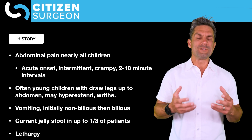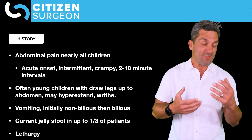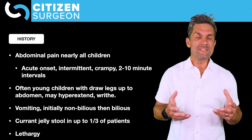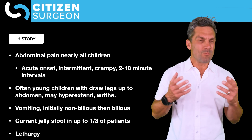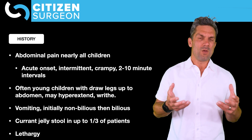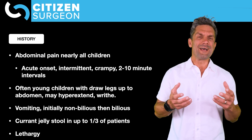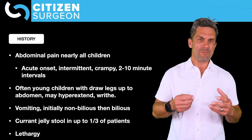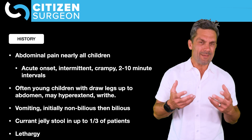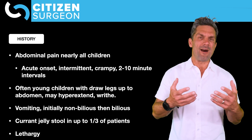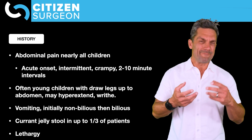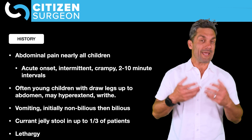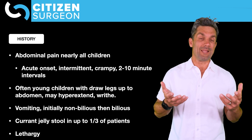Currant jelly stool is seen in about a third of patients. Why currant jelly and not just bright red blood? It's not an ulcer into the mucosa — rather, the mucosa becomes edematous and starts to slough off, producing that thick, mucusy, bloody discharge that looks like currant jelly.